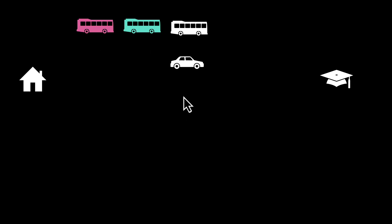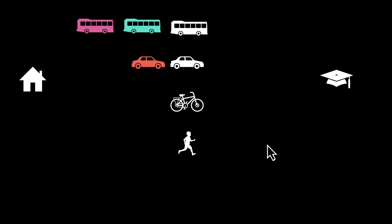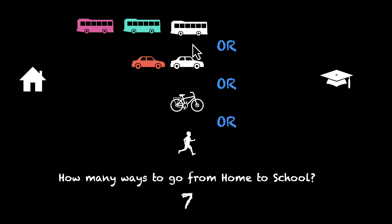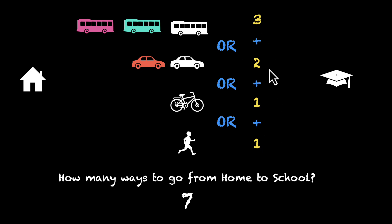Here's another one. From your home to school, this time you have three buses — one, two, and three — and they're very different buses. You have two cars: an orange car and a white car. You also have a bike and you can walk to school. Same question: how many ways to go from home to school? Seven. We can take the bus or the car or the bike or walk. Three buses, two cars, one bike, one walk — so three plus two plus one plus one equals seven ways to go from home to school.